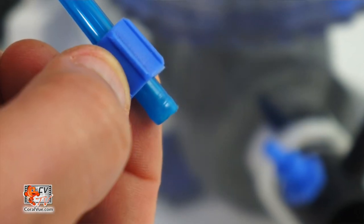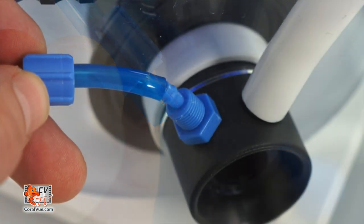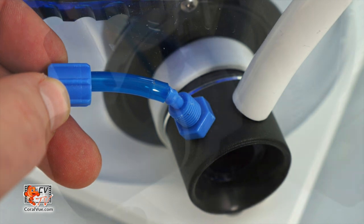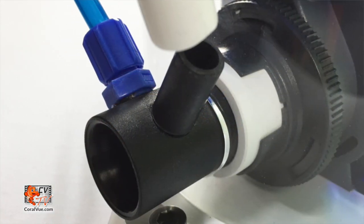Slip the blue nut from the ozone input fitting over the blue tubing and slip the hose over the ozone input barb and tighten the nut securing the connection. Slip the airline over the larger barb of the venturi.